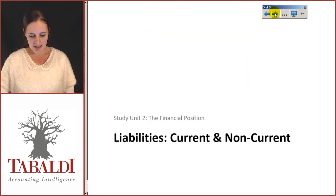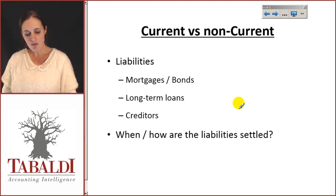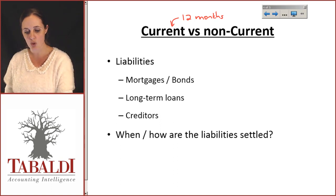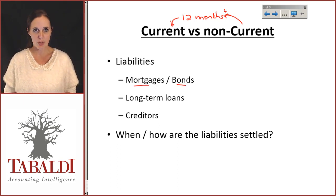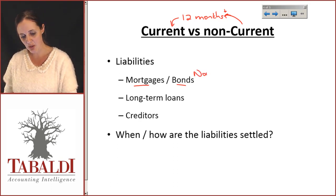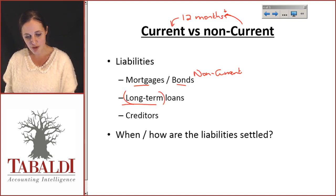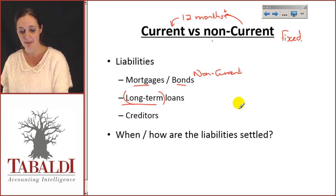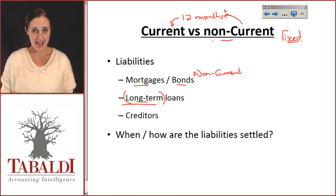Exactly the same thing applies when we look at liabilities, except we're asking ourselves when you're going to have to settle them — when you're going to have to pay them off. Again, current versus non-current, broken down by 12 months. Common liabilities: mortgages or bonds with the bank — if you take out a mortgage on your property, there's no way they expect you to pay it off within a year; you generally have 20–25 years, so that's non-current. Another word for non-current is 'long-term,' and you'll also hear 'fixed' — these all mean the same thing: non-current, fixed, long-term assets or liabilities.